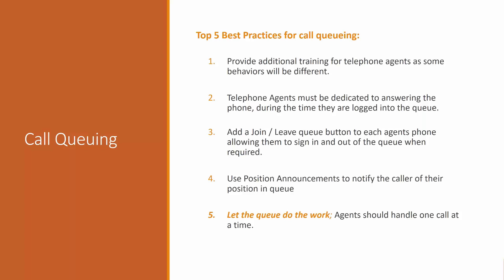Number four: use position announcements to notify callers of their position in queue. If I'm number seven in queue on a Monday morning, I have other things to do — I might call back at 11am or 3pm. It's a polite way to notify people that you're busy. In the demo I've set up, I have a queue announcement every 30 seconds, so if you're in queue you'll hear something like 'you are currently number one in line.'